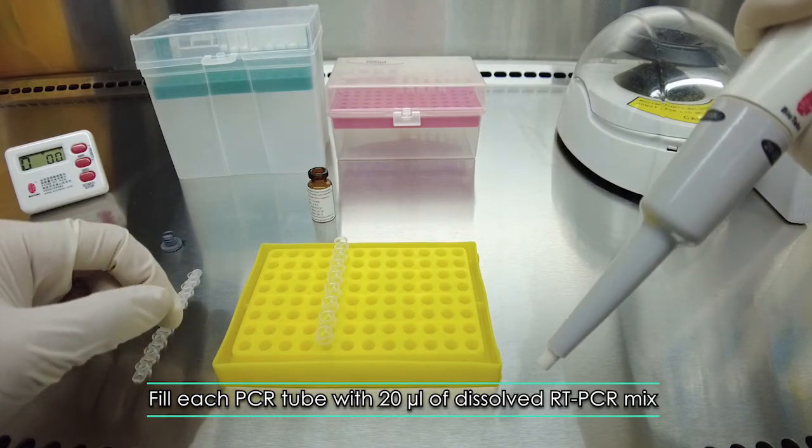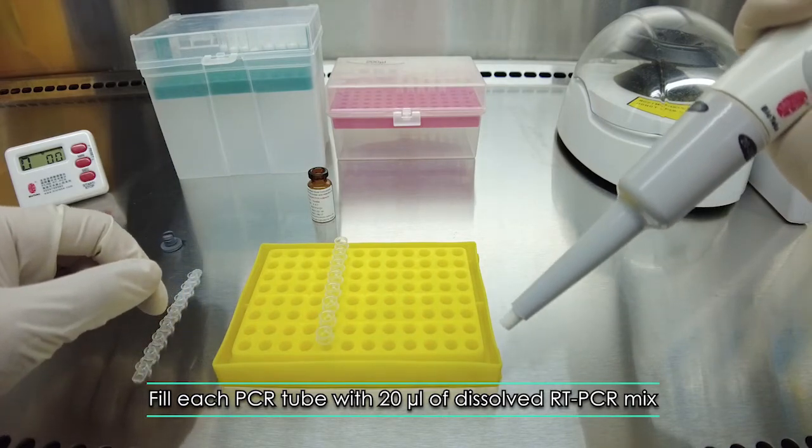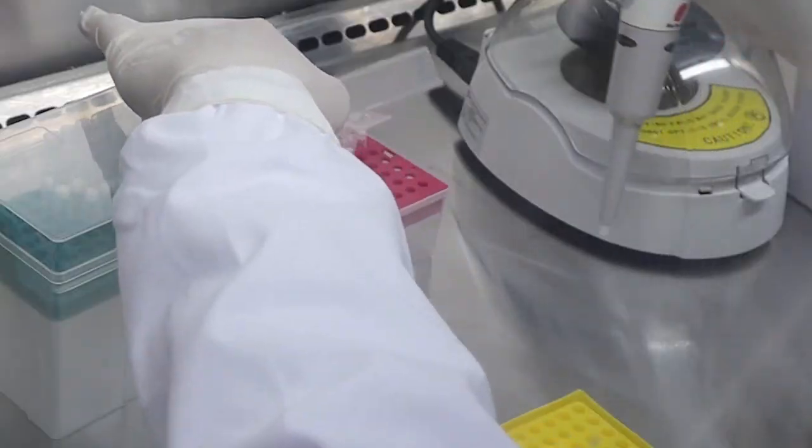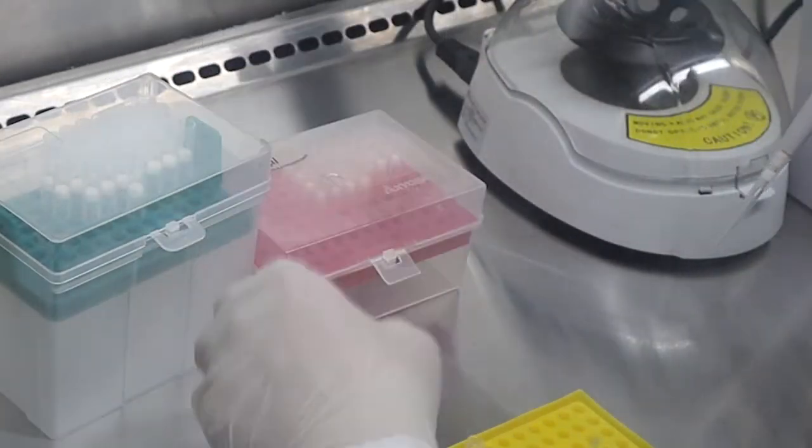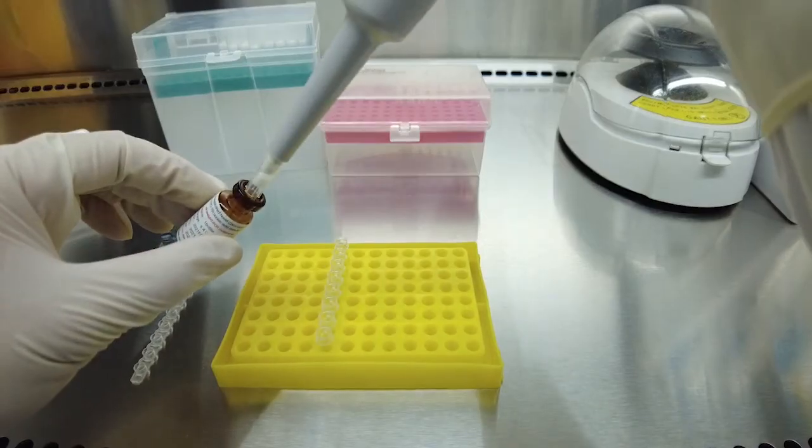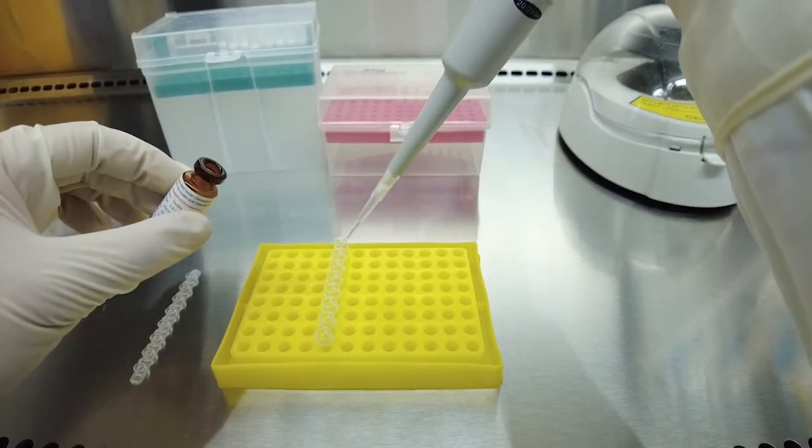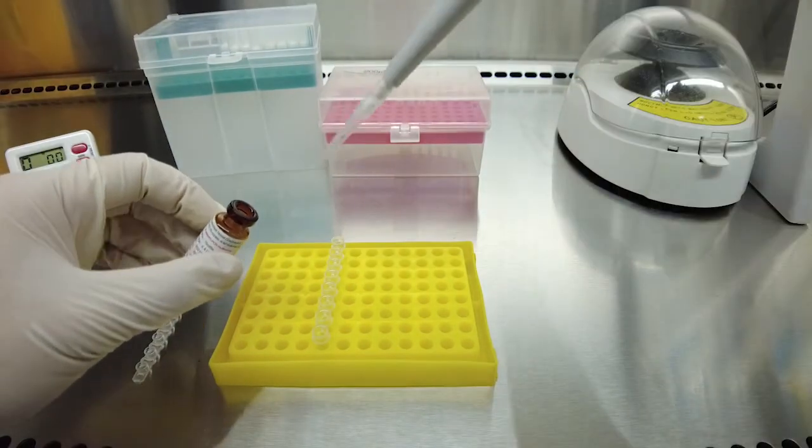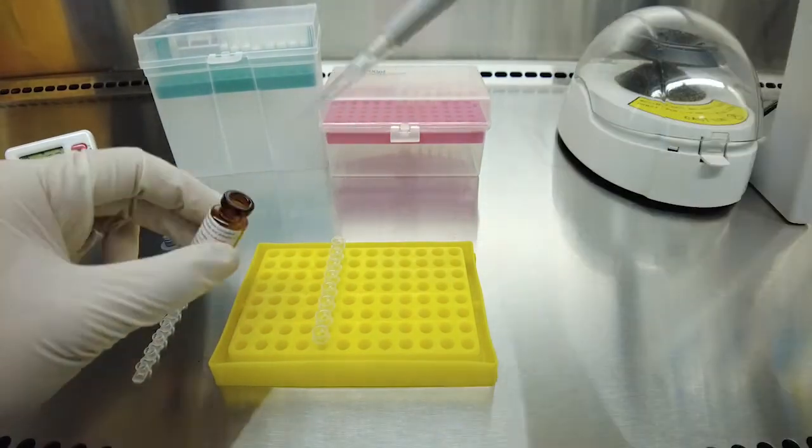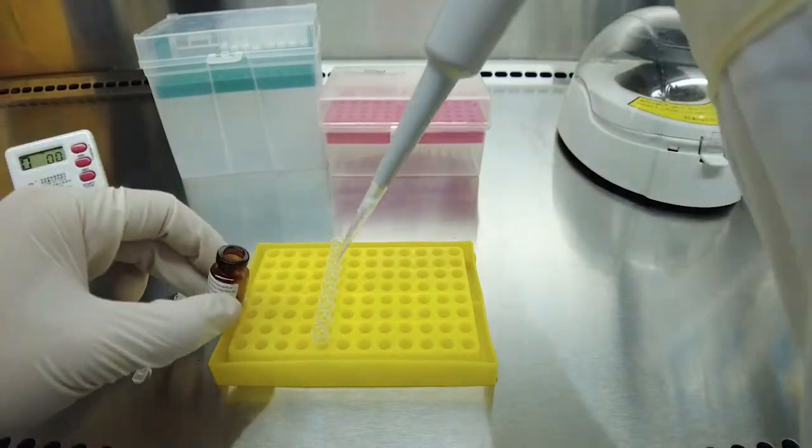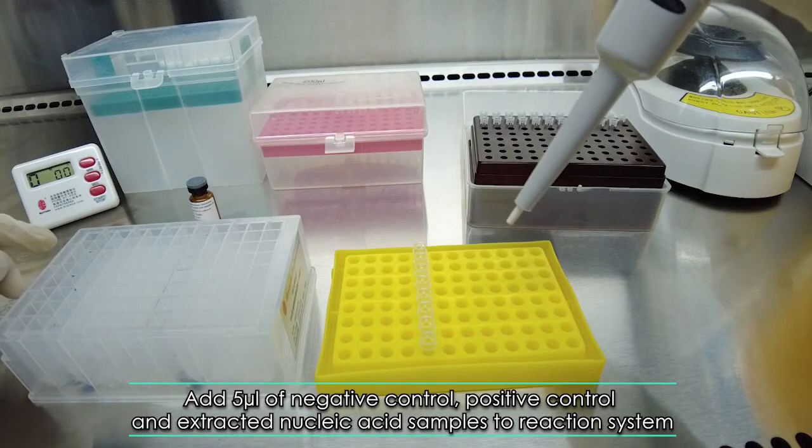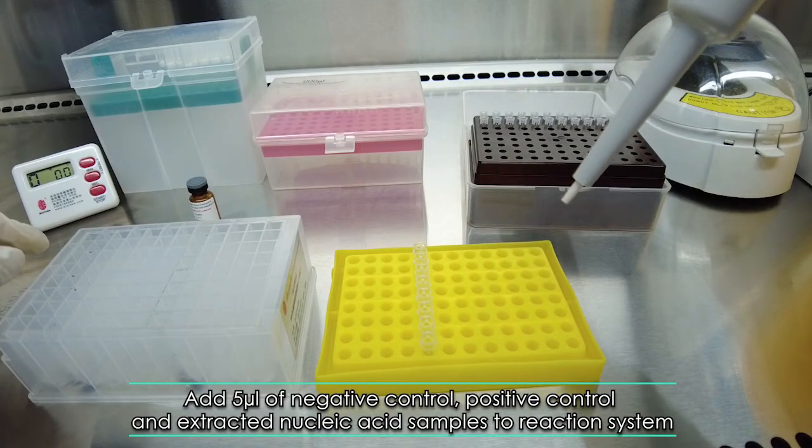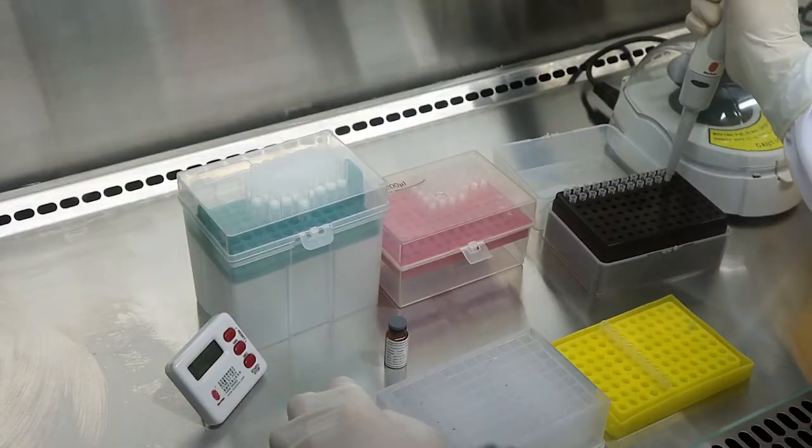Fill each PCR tube with 20 microliters of dissolved RT-PCR mix. Add five microliters of negative control, positive control, and extracted nucleic acid samples to the reaction system.